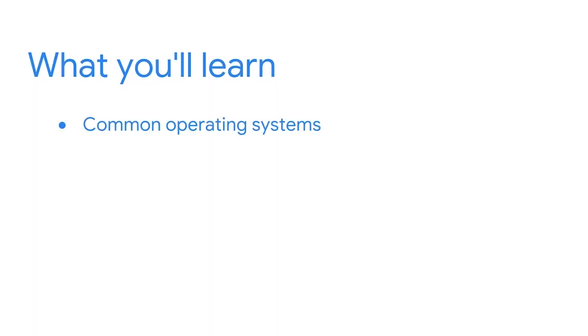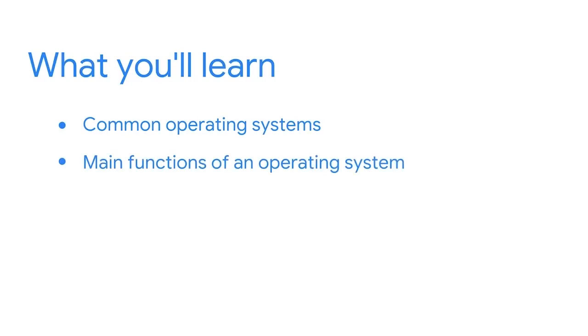How many times a week do you use a computer? For some of us, the answer might be a lot. There are incredible machines that let us do everything from using specialized applications when completing a task at work, to sending emails to loved ones in a distant place. Have you ever thought about how computers can do all of this? Well, that's where operating systems come in. In this section, we'll learn about common operating systems and we'll explore the main functions of an operating system.